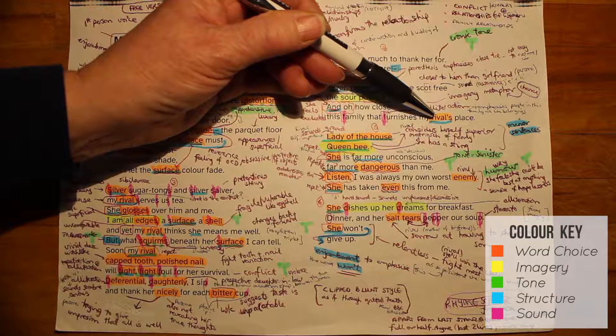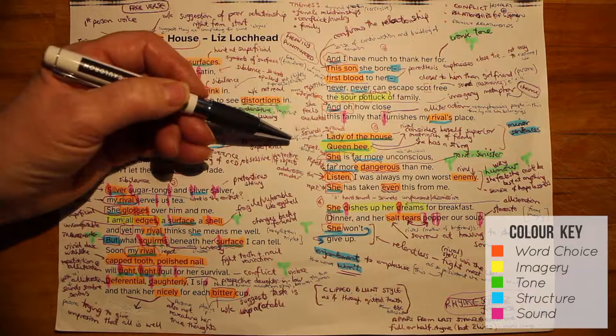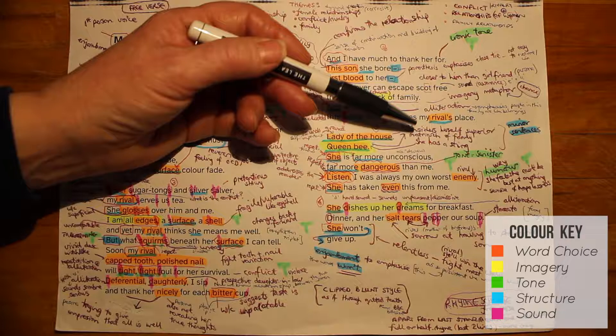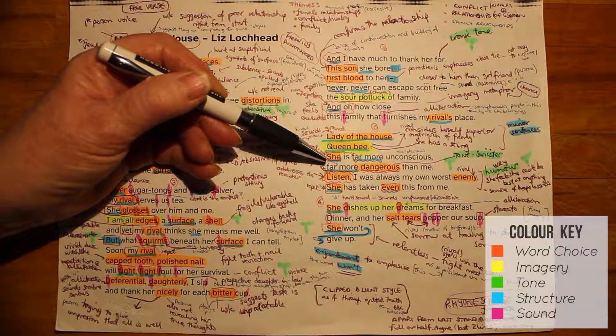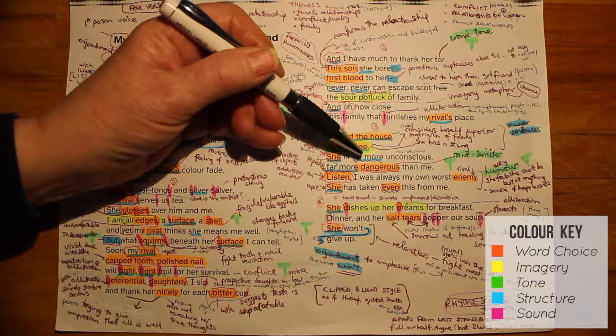Stanza five opens powerfully with two short minor sentences: 'Lady of the House,' then the imagery of Queen Bee. These create an impression of the rival as grand and self-important — someone who considers herself superior, the matriarch and strong female figure of the family. Also, with the imagery of the bee, she has a sting. The repetition of 'she' occurs several times over this stanza and the next, emphasising that the rival is becoming more and more intimidating to the persona. The repetition of 'far more unconscious, far more dangerous' also builds suspense as to whether this woman will win the contest.